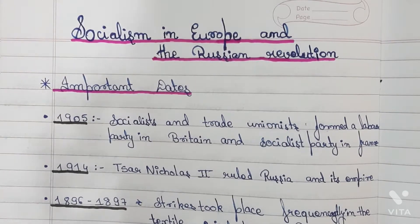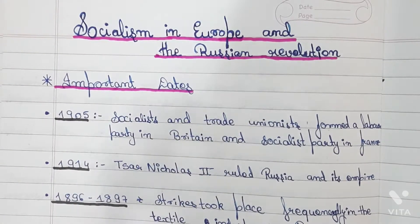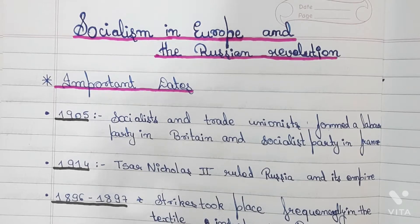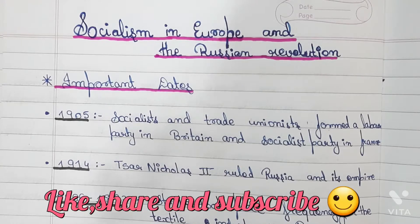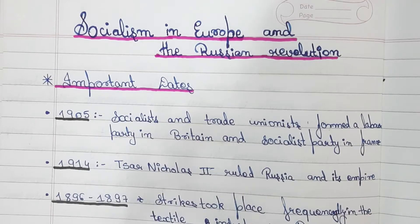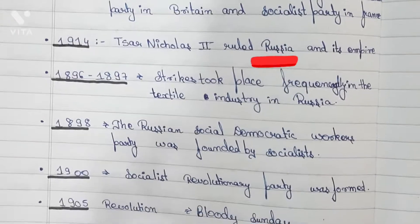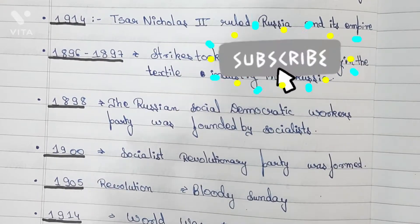So let us start with the important dates from this history chapter. 1905: socialists and trade unions formed a Labor Party in Britain and a Socialist Party in France. 1904: Czar Nicholas II ruled Russia and its empire. 1896 to 1897: strikes took place frequently in the textile industry in Russia.